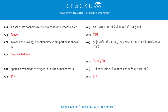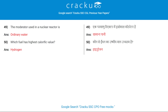A tissue that connects muscles to bones in humans is called tendon. In machine drawing, a sectional view cut portion is shown by diagonal hatching. The approximate percentage of oxygen in earth's atmosphere is 21%. The moderator used in a nuclear reactor is ordinary water. Which fuel has the highest calorific value? Hydrogen.